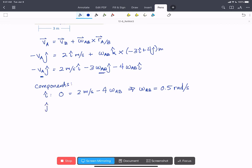And then the j-hat, we're going to get minus VA equals minus 3 omega AB. Cancel out those minuses. And VA, the scalar equals 1.5 meters per second.